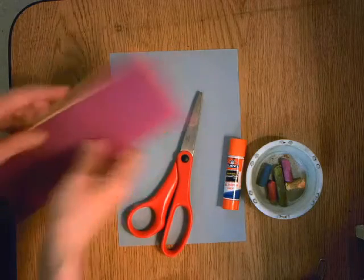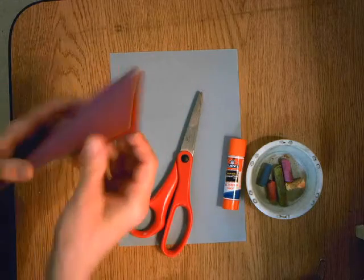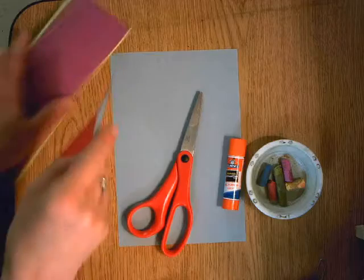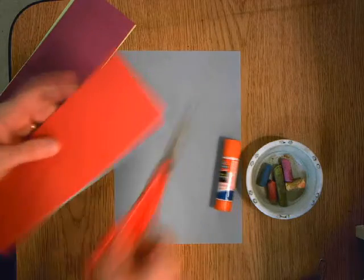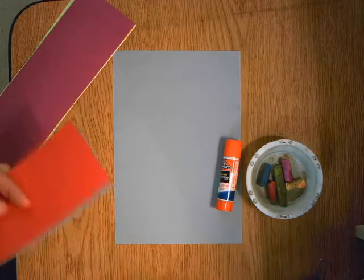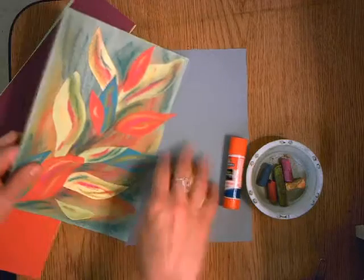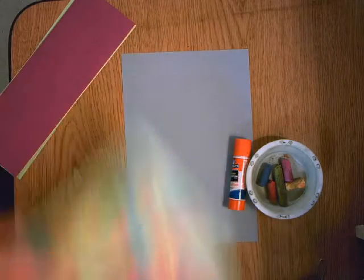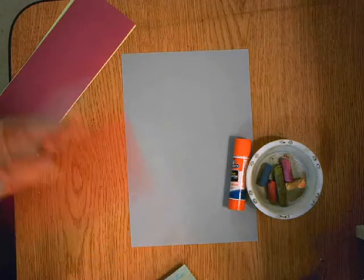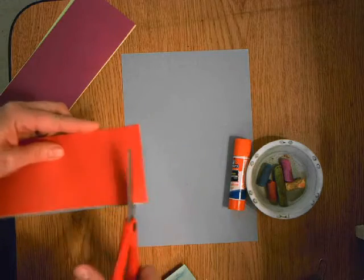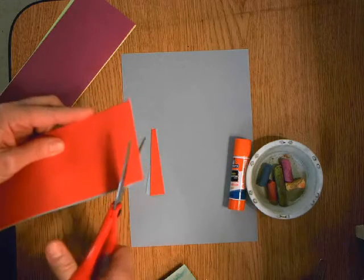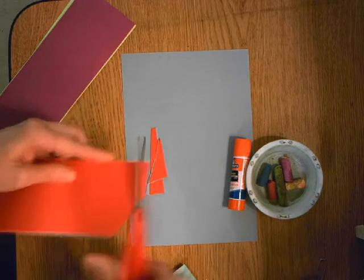So what I'm going to do right now is I'm just going to take my papers and I'm going to take a couple, two or three at a time, and I'm going to cut some shapes. Because I did so many organic shapes last time, I'm going to create more geometric shapes this time by holding the papers together and just cutting some triangles, rectangles.